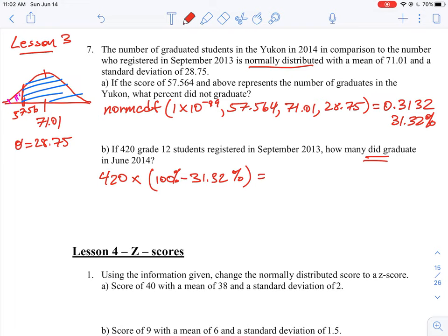When we work it out on the calculator, you should find that you'll have 420 times—let's get a calculator here—we're going to have 1 minus 0.3132, which is 0.6868. It's important to take this to four decimal places: 0.6868 times 420 equals 288.46 students.